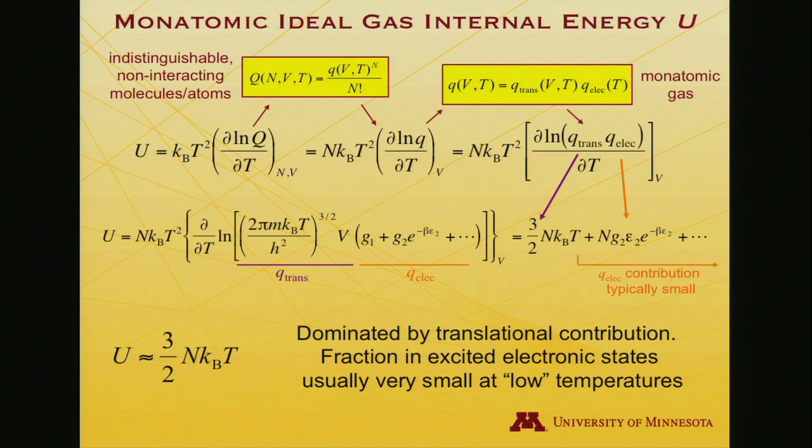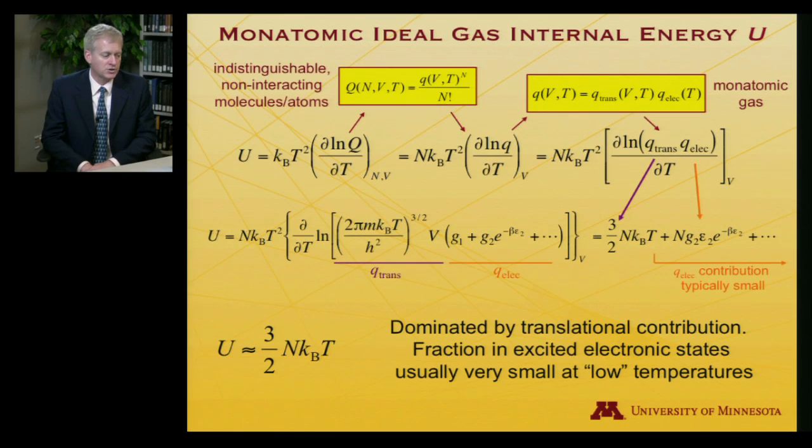The second term is the first term that does have a temperature dependence because beta appears here. But you've already derived that, so I don't have to tell you. I'll emphasize that the electronic contribution to the internal energy is typically going to be quite small. As a result, the internal energy is three halves NkT.